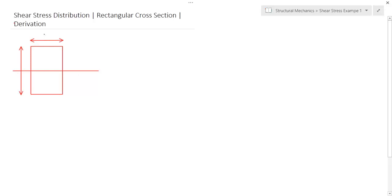This is the breadth, let it be b, and this is the depth, D. And this is the neutral axis.